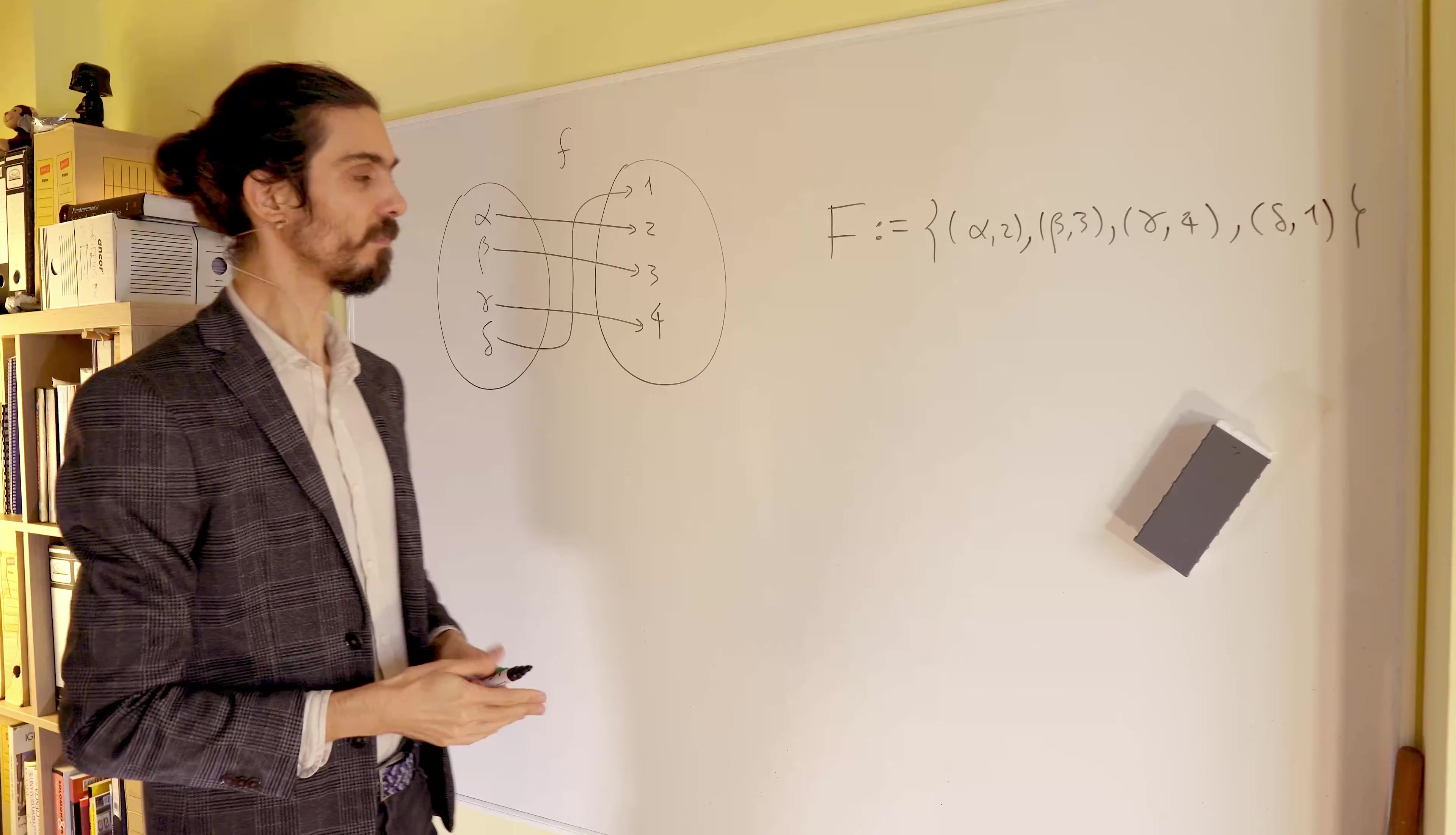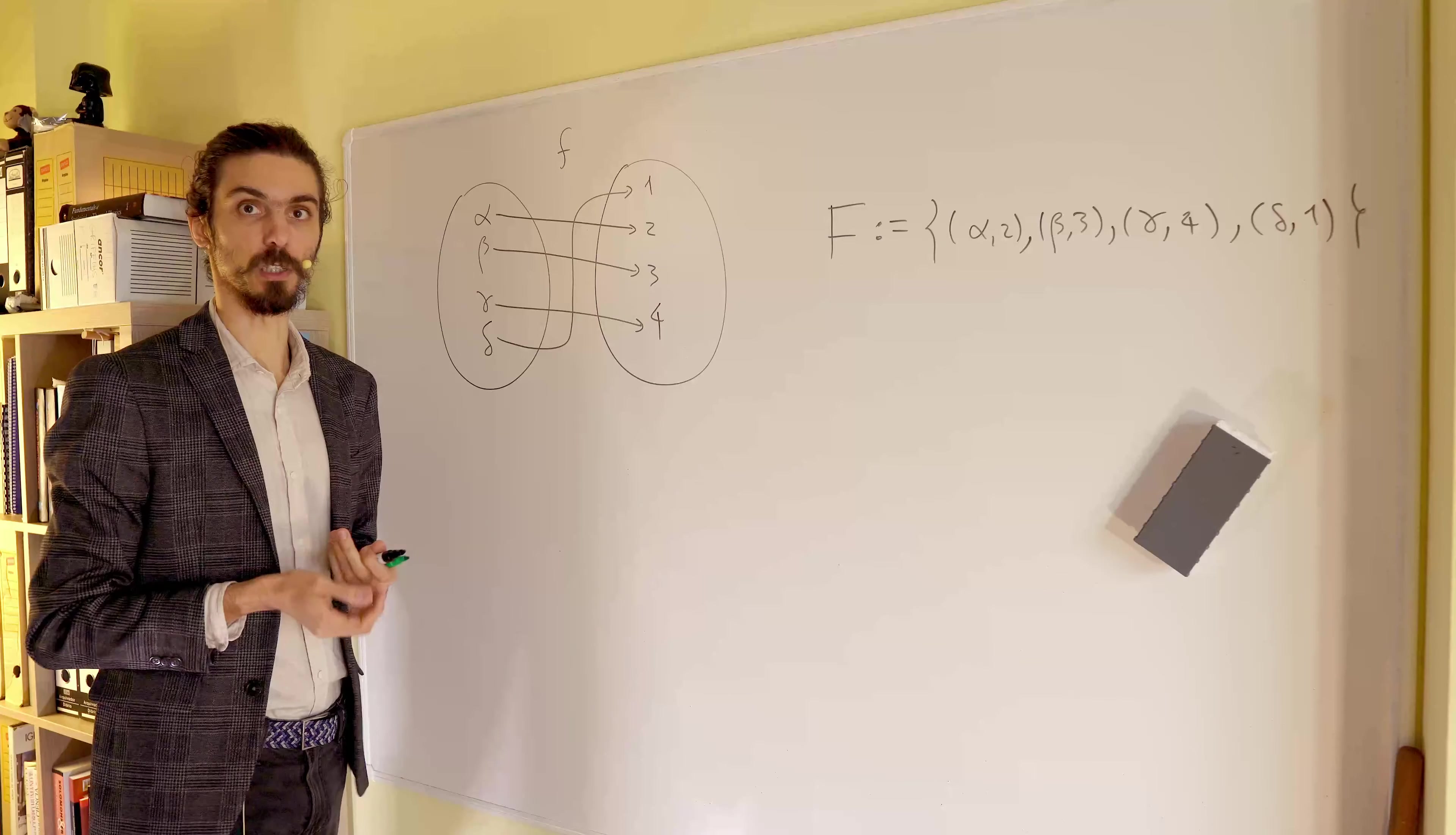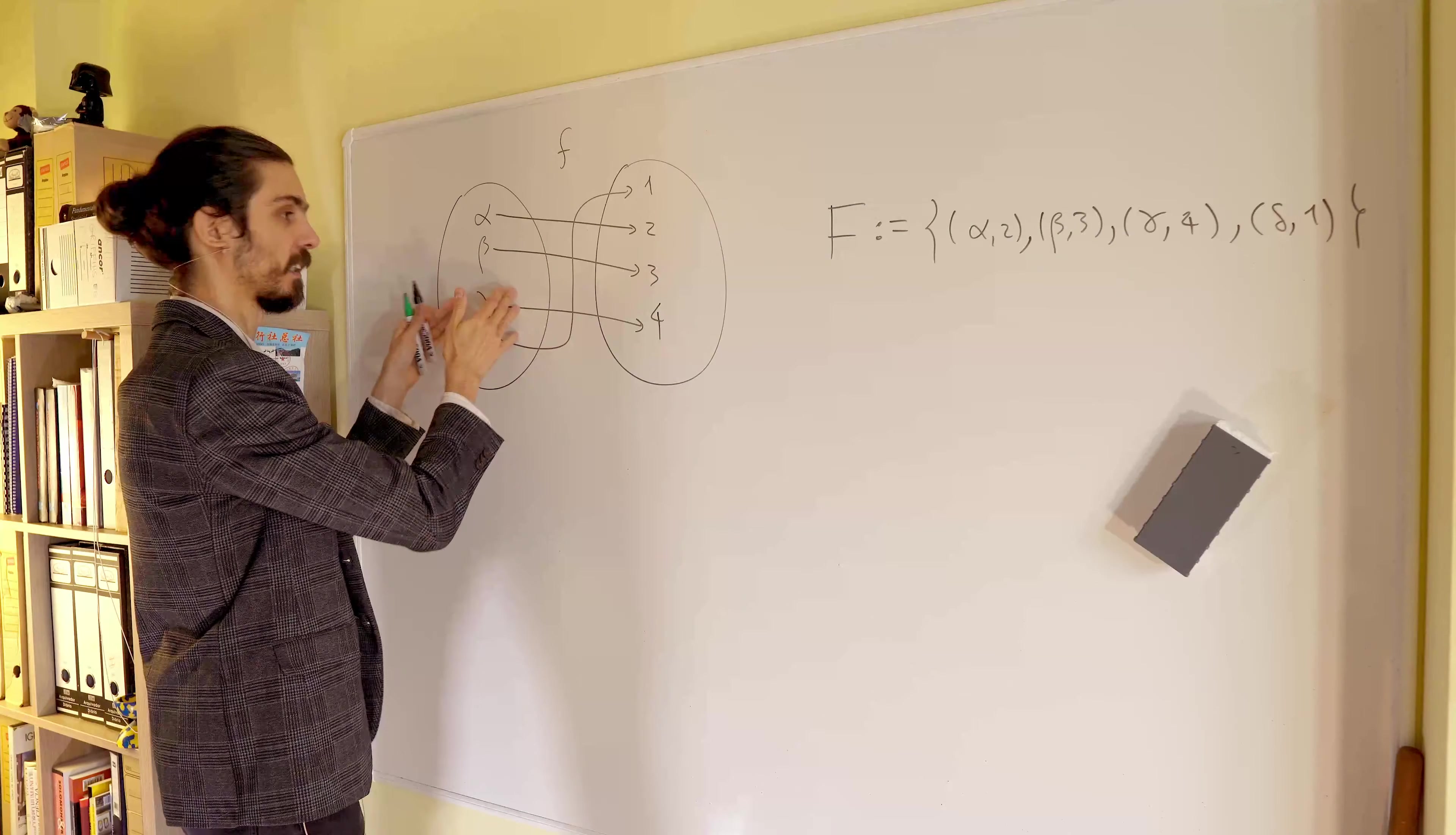Okay? So we have the same function, two points of view, and I want the inverse function. Well, the inverse function must assign now elements, the y elements, to the x elements.